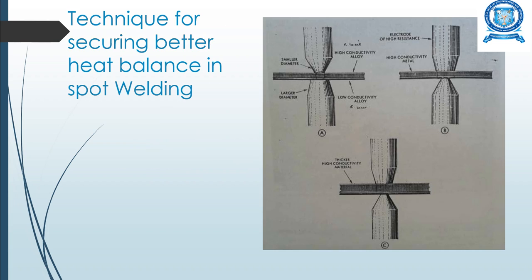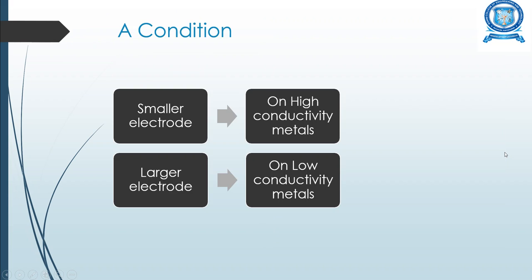These are the techniques for securing better heat balance in spot welding. In diagram A, a high conductivity alloy material and a low conductivity alloy material are placed between two electrodes — a smaller diameter electrode on top and a larger diameter electrode at the bottom. In diagram B, high pressure is applied from the top with a smaller diameter electrode at the bottom. Diagram C shows a thicker high conductivity material placed between two electrodes with pressure applied from the top. The condition is: a smaller electrode is used on high conductivity metals and a larger electrode on low conductivity metals.